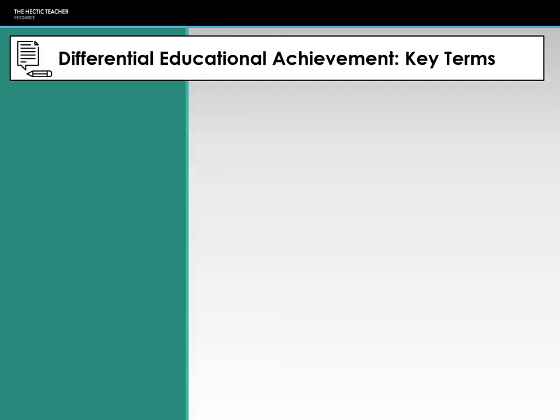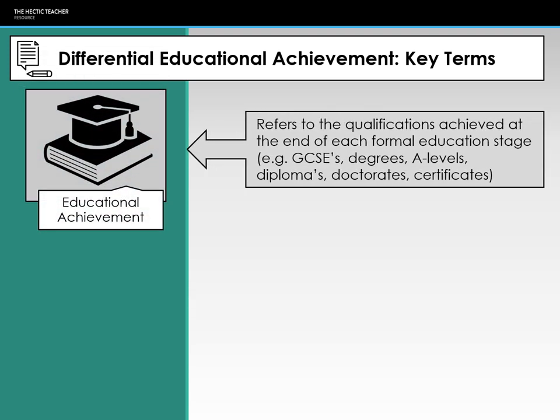Starting with key terminology — educational achievement refers to the qualifications, levels, grades, GNVQs, BTECs, or whatever you achieve at the end of each formal education stage. In the UK, that's the end of Key Stage 2, the end of Key Stage 4, and the end of Key Stage 5.